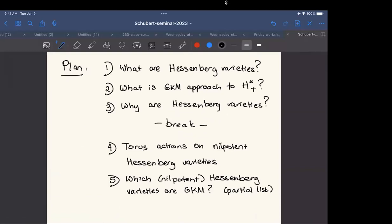First, I'm going to talk about what are Hessenberg varieties, what is the GKM approach, and really why are Hessenberg varieties. Then we're going to take a break and come back and talk about torus actions on Hessenberg varieties and this question, which Hessenberg varieties are GKM, which will be natural to think about as a partial list of which nilpotent Hessenberg varieties are GKM.